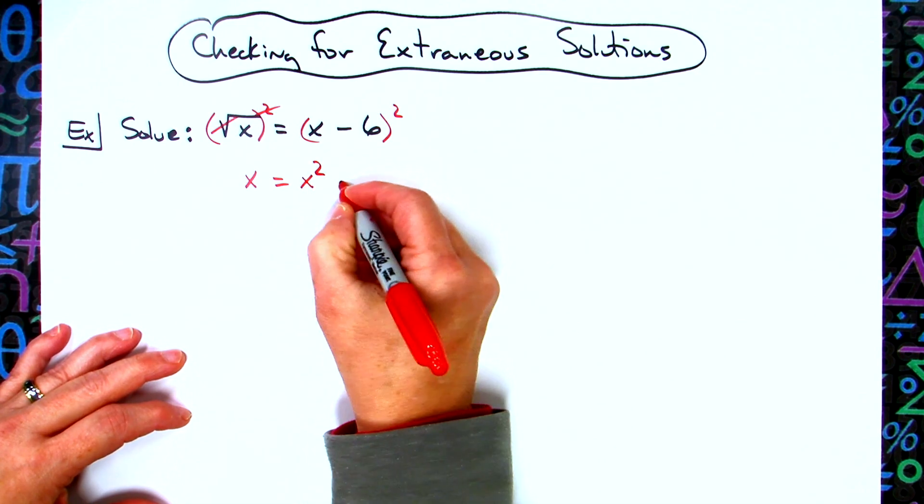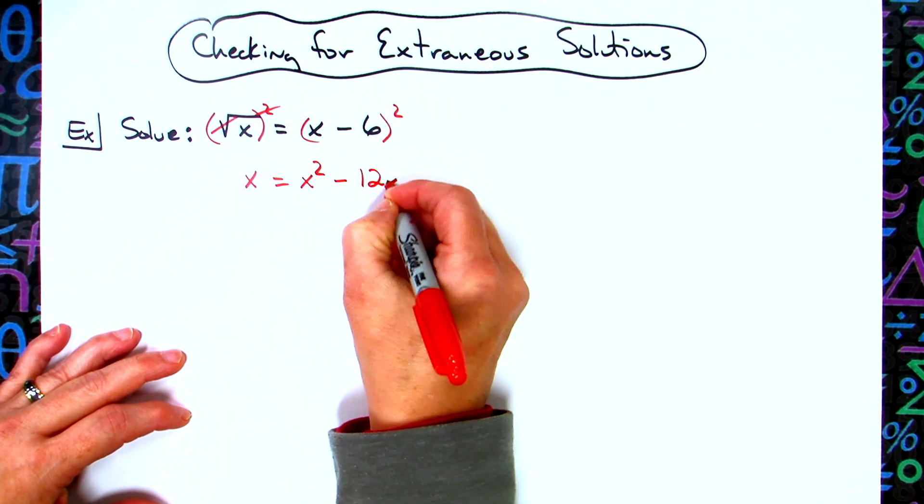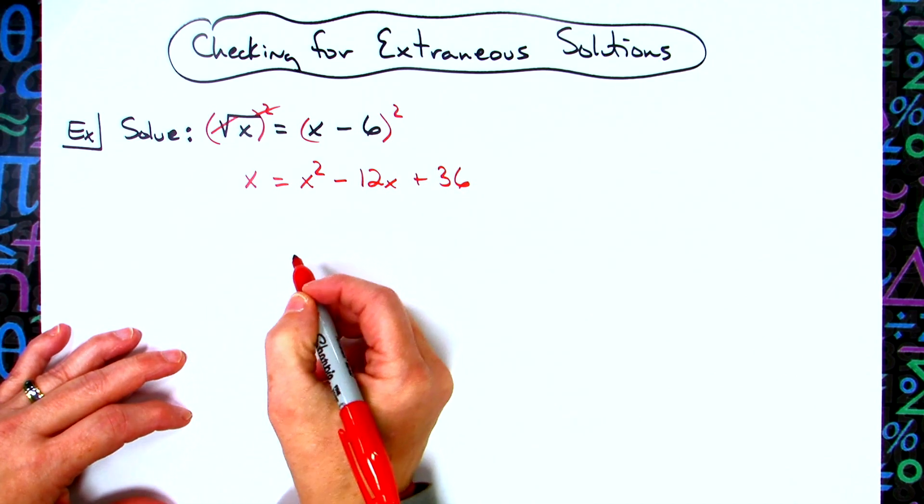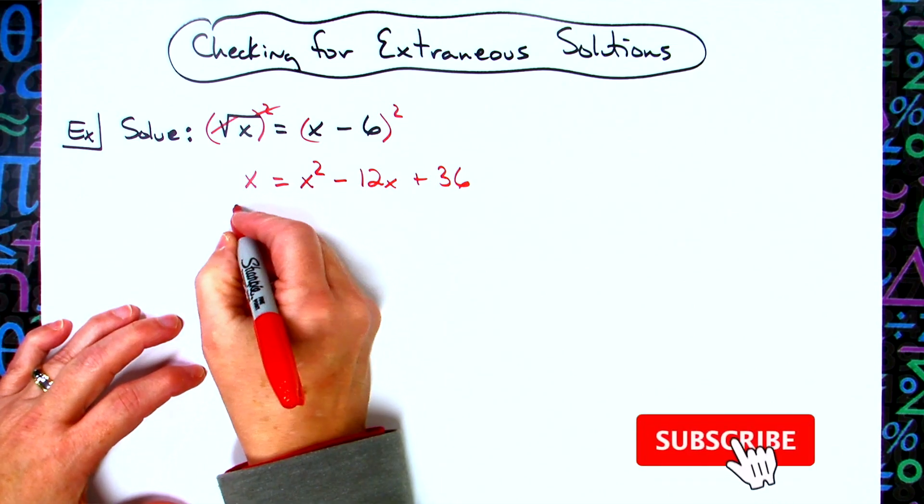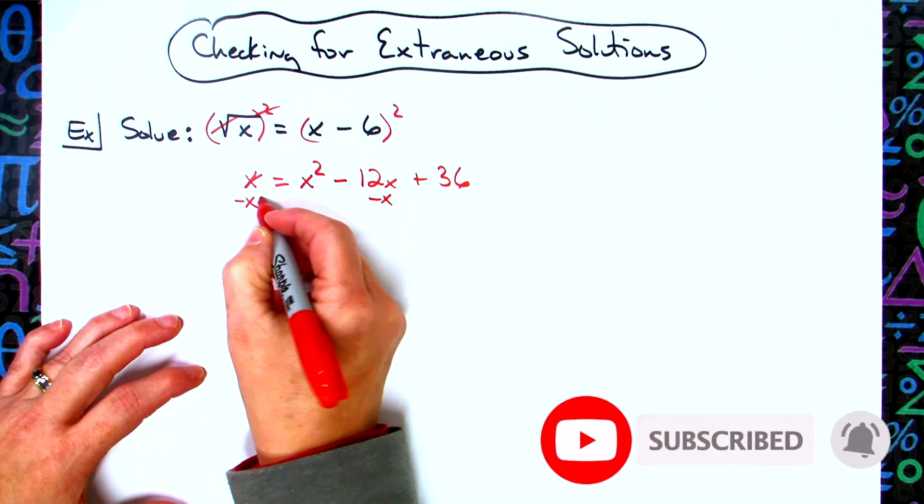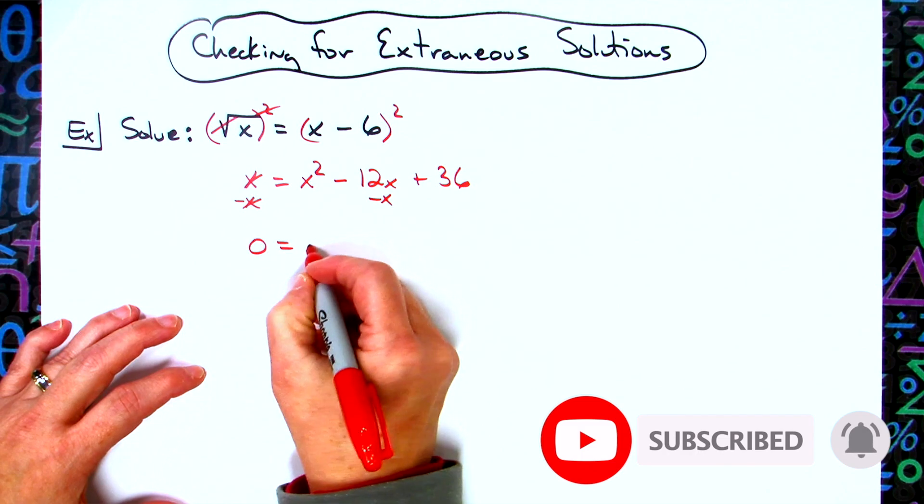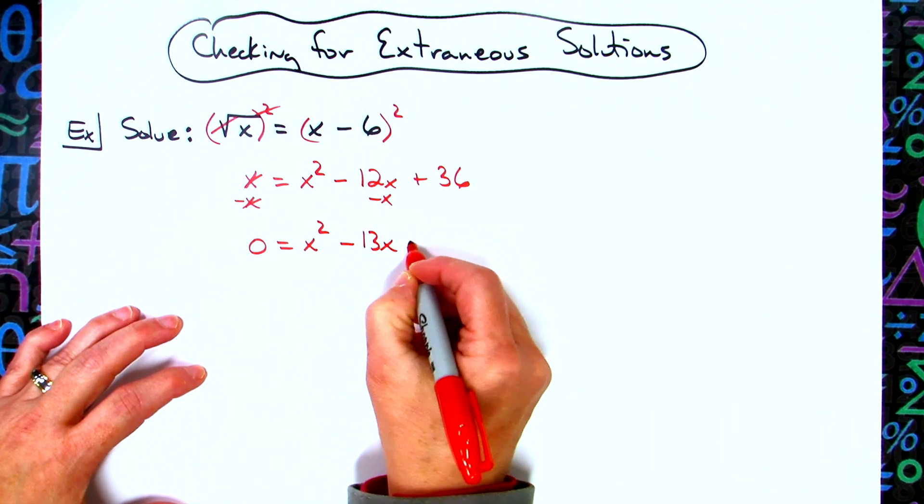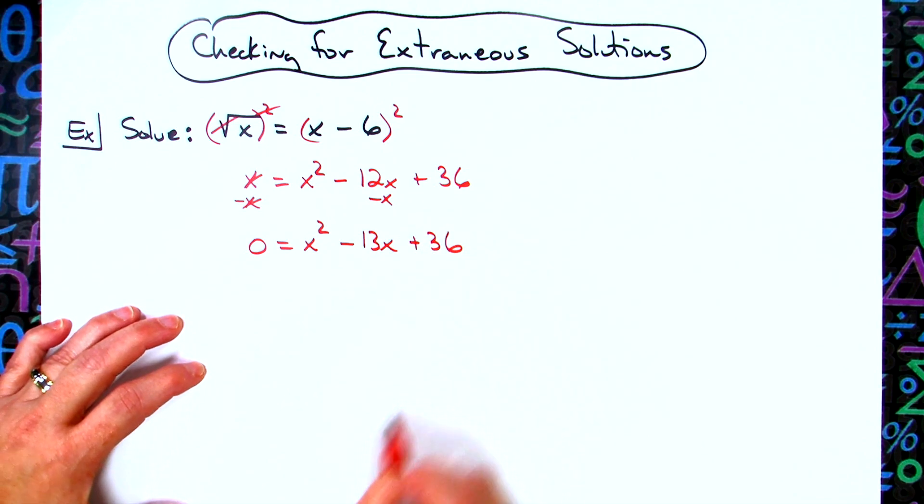At this point we want to move all of our terms to the right hand side of the equation, so we'll subtract x. That's going to give us 0 = x² - 13x + 36.